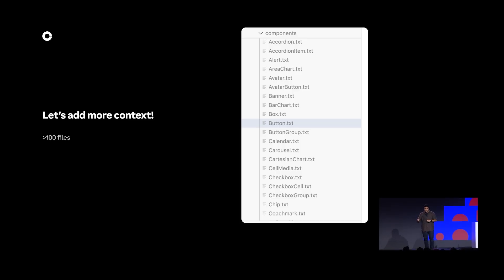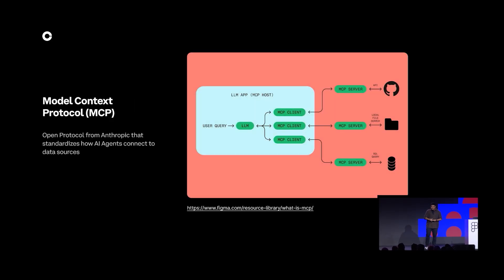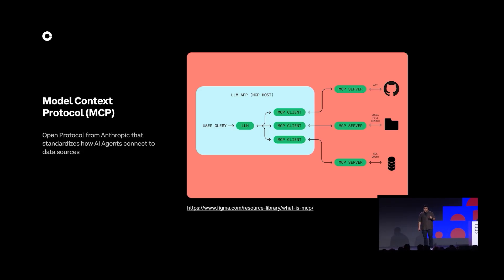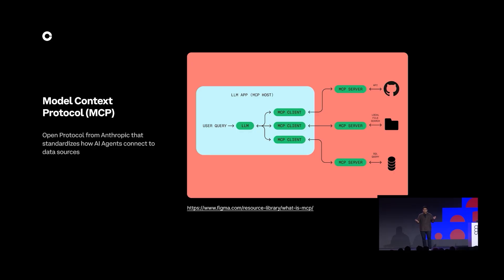We're sort of between a rock and a hard place — before we didn't have any context, and now we have too much. We need to find the sweet spot for the best possible outcome. That's where we found out about MCP, which stands for Model Context Protocol. It's an open protocol created at Anthropic and has since become an industry standard for how AI agents connect to external data sources. The beauty of this protocol is that LLMs can now fetch information on a case-by-case basis as needed.